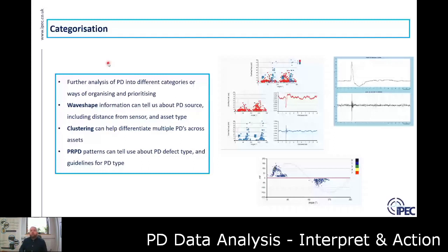We have PD being detected by our monitoring system, by different sensors. We may also be detecting multiple PD activity — PD from multiple assets, cable or switchgear. We want to do further analysis to find out where our PD may be.